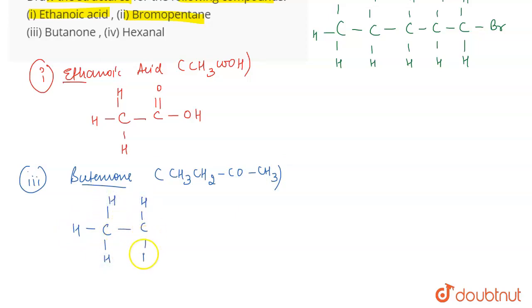What is happening here is that this carbon is linked to three hydrogens, then this carbon is linked to two hydrogens, then you have a ketonic group which is C double bond O, then you have CH3. This is the structure for butanone.